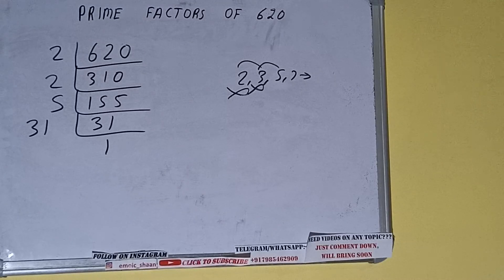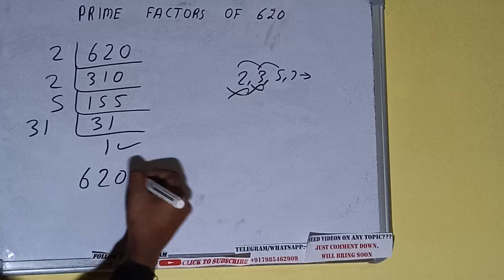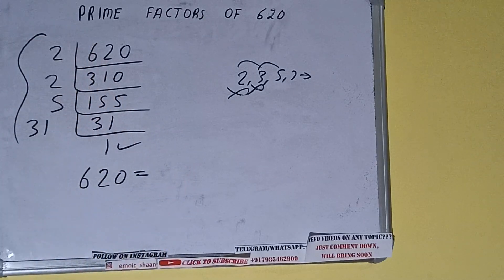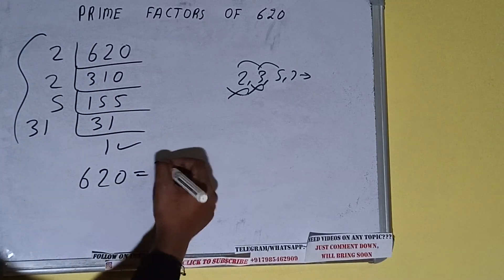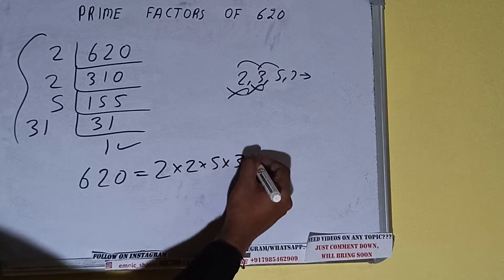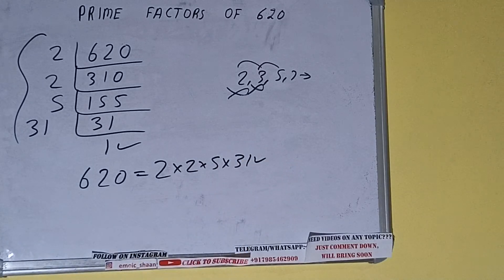Once we get 1, we need to stop and do one last thing. That is, prime factors of 620 equals multiply whatever we have on the left-hand side: that is 2 × 2 × 5 × 31. That will be the answer.